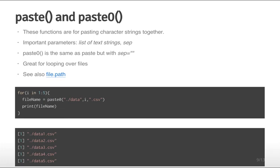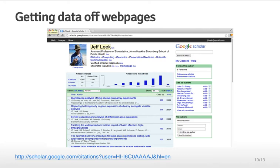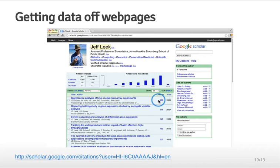Another way to access data is to scrape it directly off web pages. For example, a Google Scholar profile contains data about papers written, citation counts, publication years, and co-author information. The URL for such a profile isn't available as a CSV, but we can access the HTML data directly from R and extract those numbers.